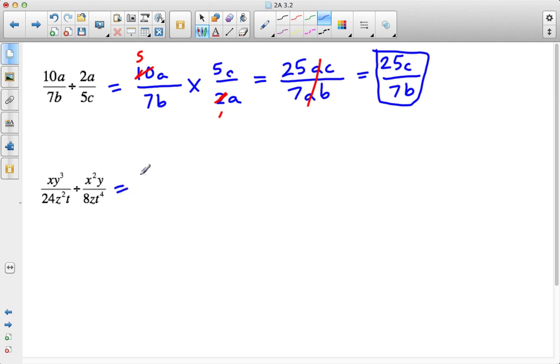First thing to do is to make it a multiplication problem. xy³/24z²t times, flipping the 2nd term, 8zt⁴ over x²y.